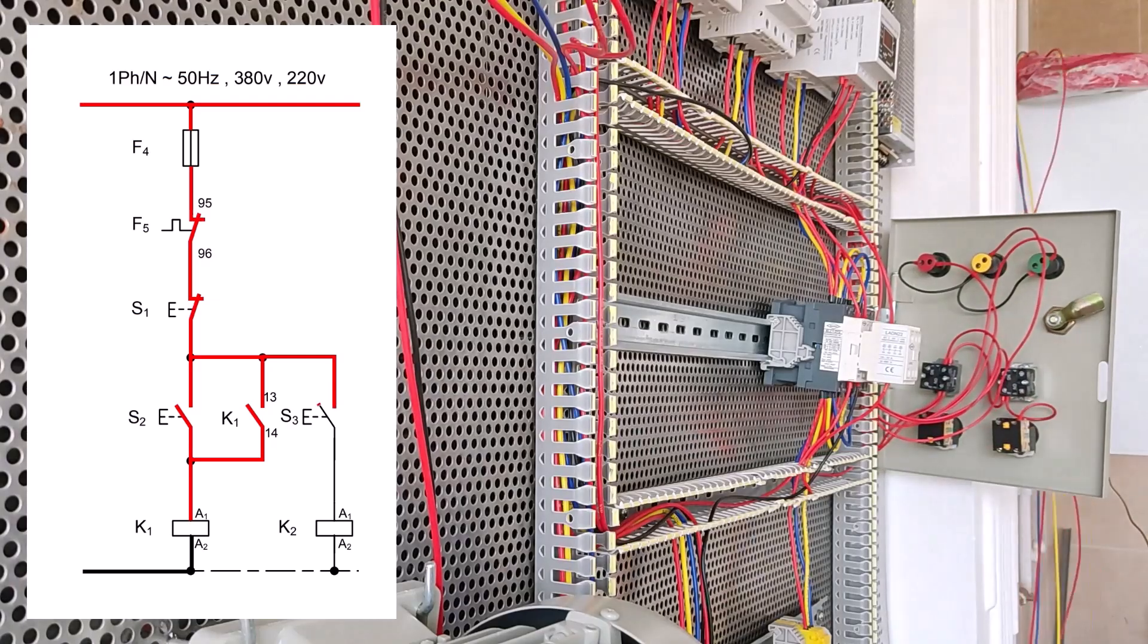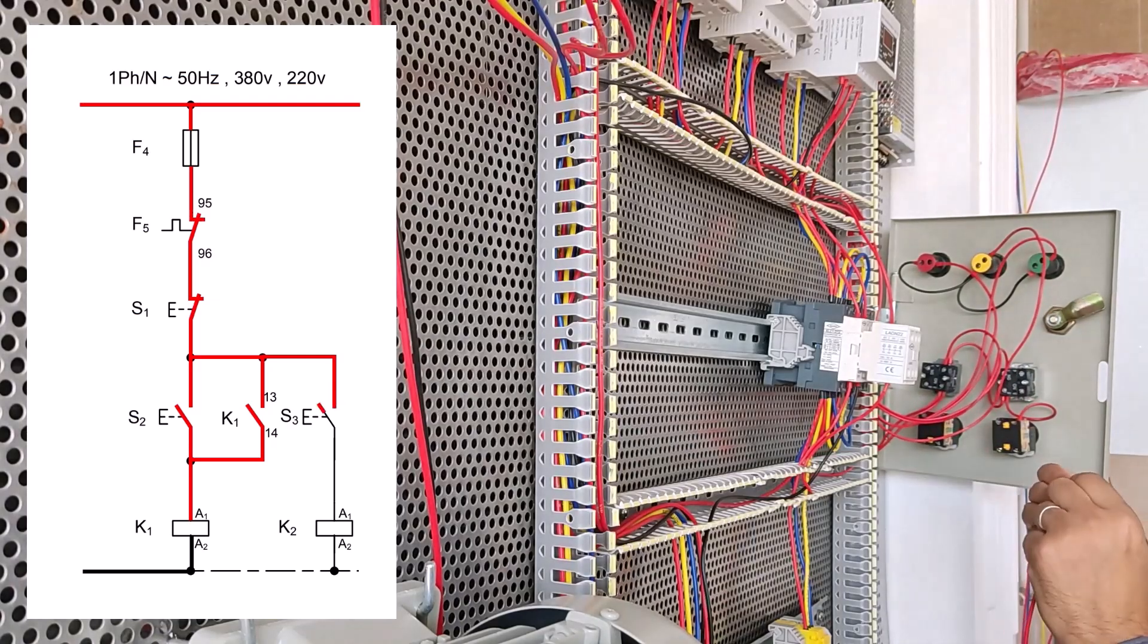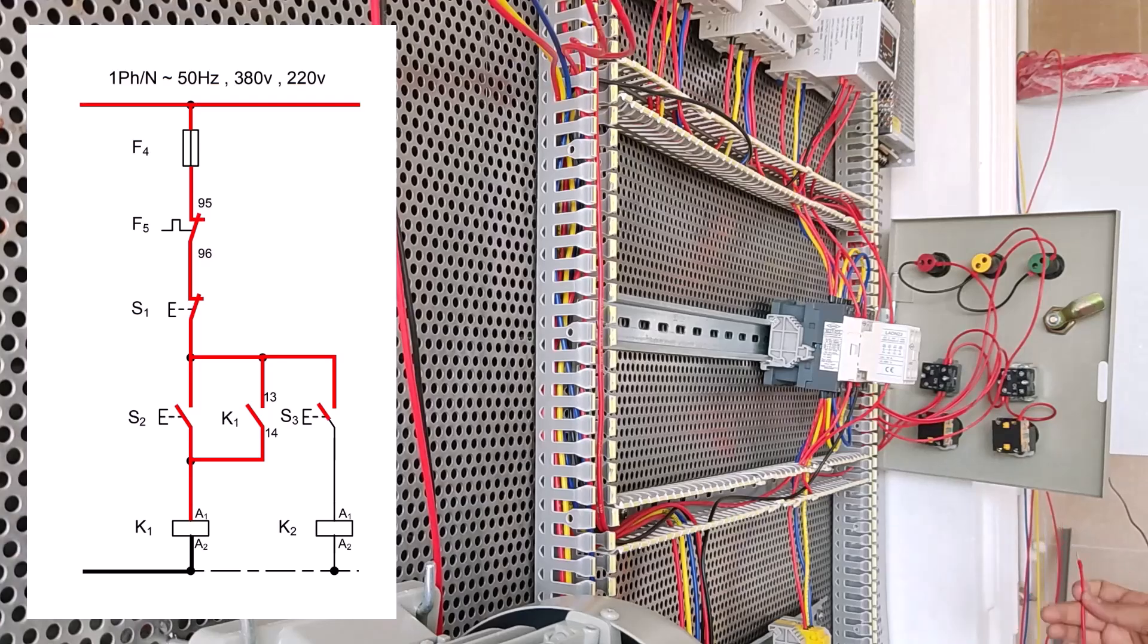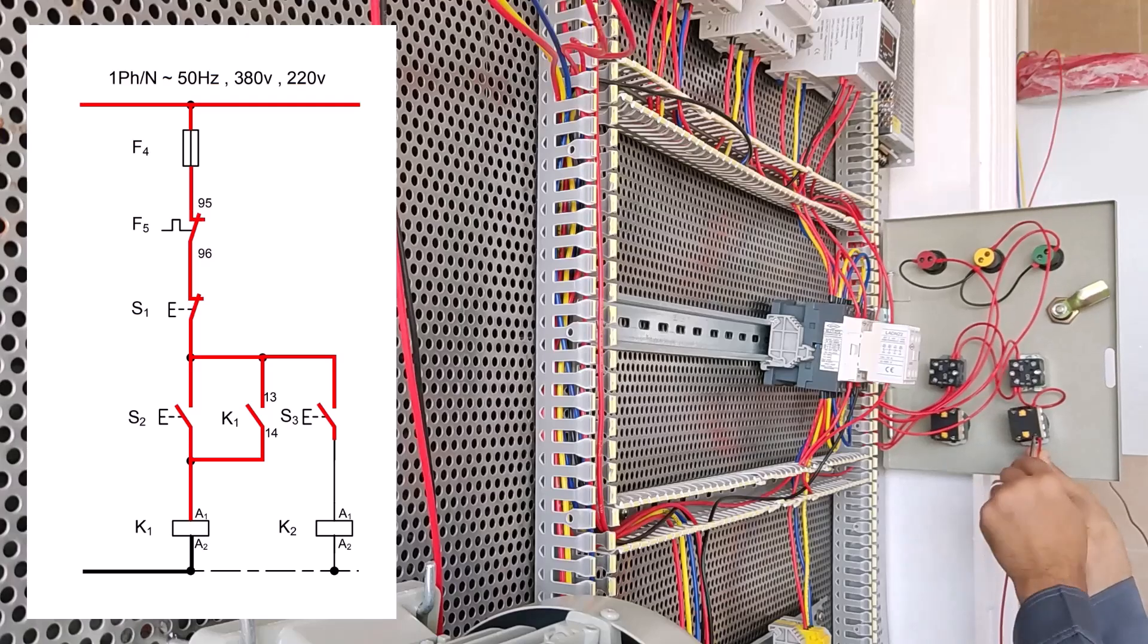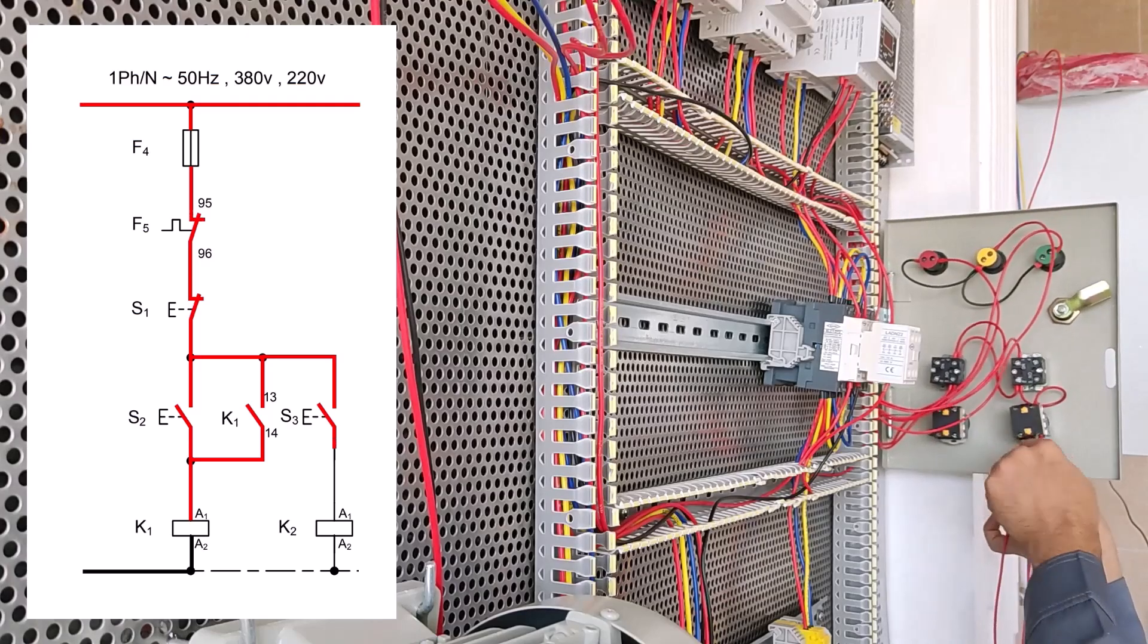Okay, now we connect a wire from 14 starter S3 to A1 conductor K2, I'm sorry, K2.